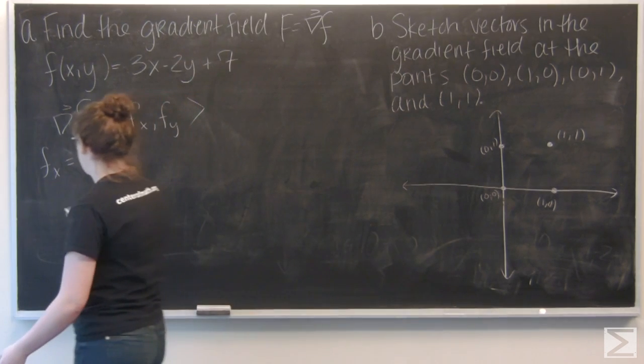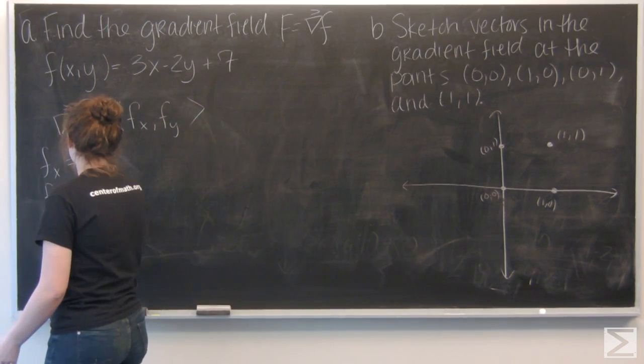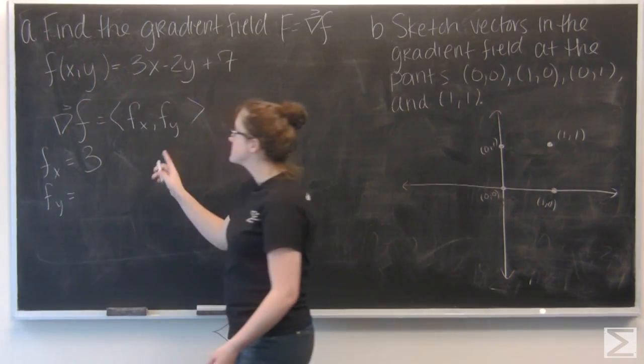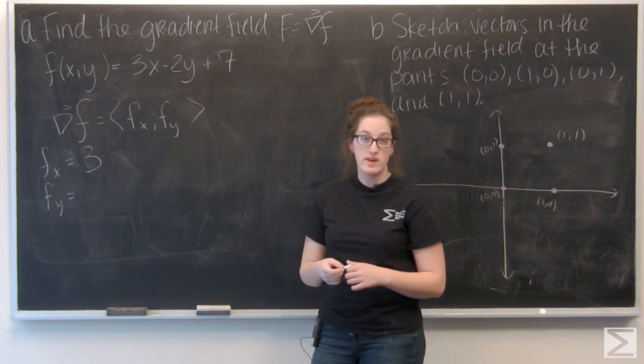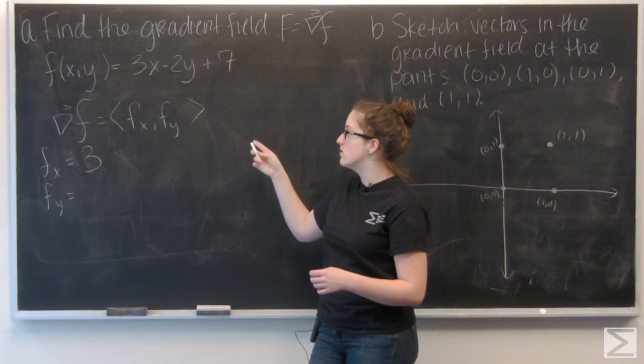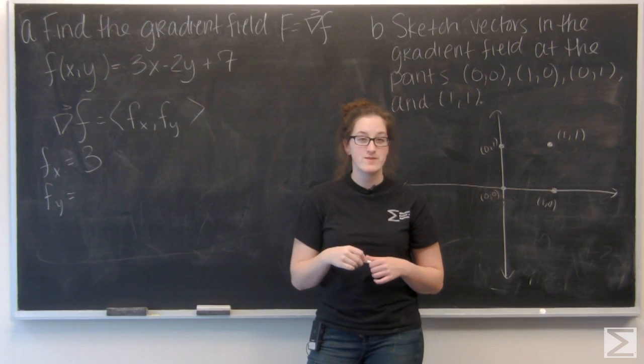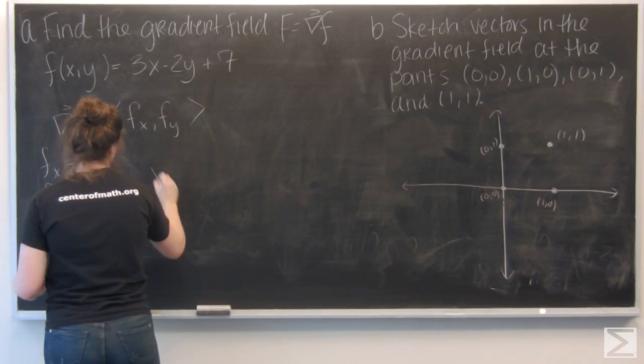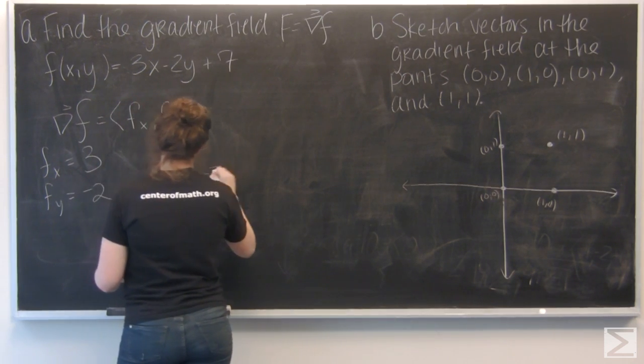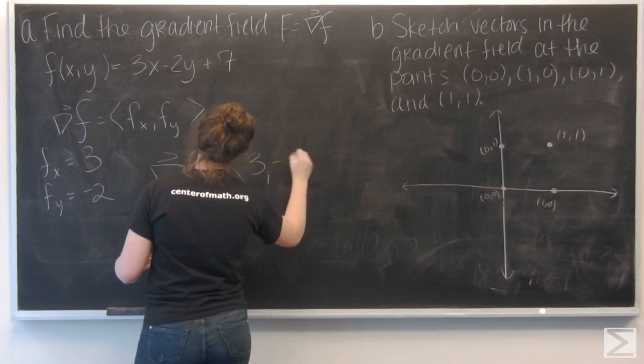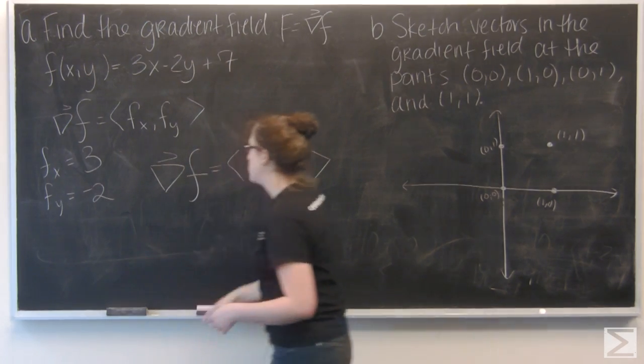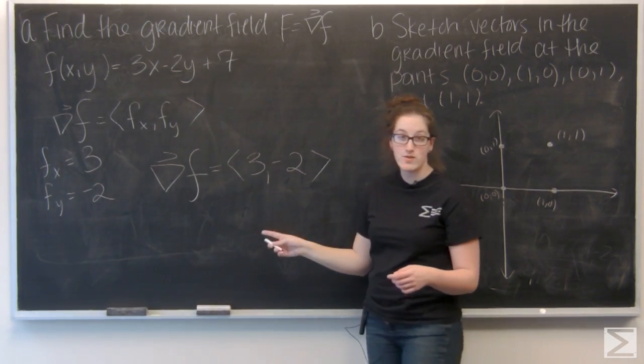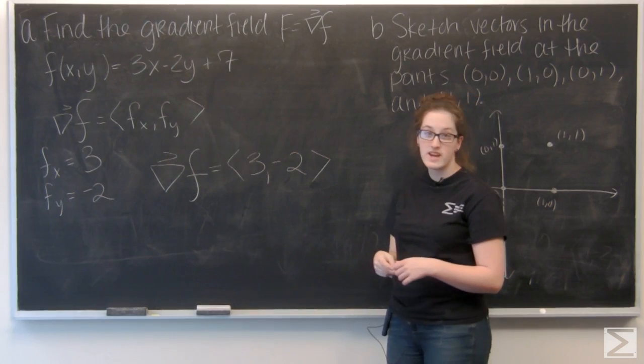For f_y, this time 3x and 7 are both constants, so they're 0. The derivative of negative 2y is negative 2. Plugging those in, the gradient of f is (3, -2).